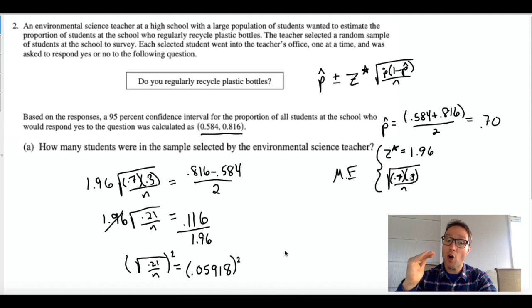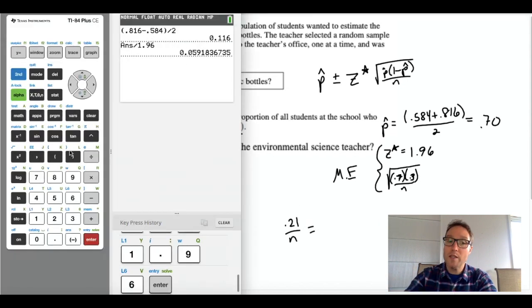And since this is a sample size question, my final answer is going to always be rounded up, okay? Because if there's any decimal part, if there's any remainder, you can't have a decimal portion of a person in your sample, so you always need to round up, even if it's like 0.1, you would still need to round up.